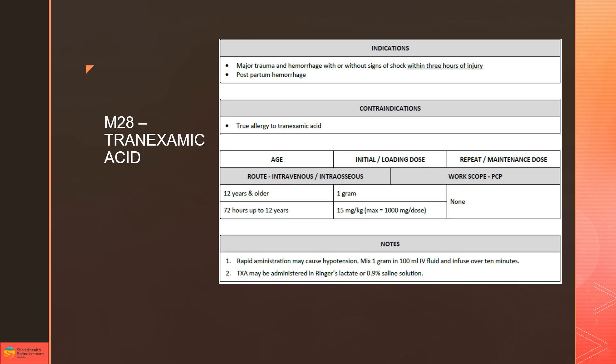The big thing is we want to make sure that we don't give this medication too fast because it has been shown to cause hypotension if it's given as a rapid bolus. The new update is we're going to mix one gram—that'll be 10 mls of TXA—into 100 ml IV fluid and infuse this over 10 minutes. We're going to be getting access to these bags for our ambulances.